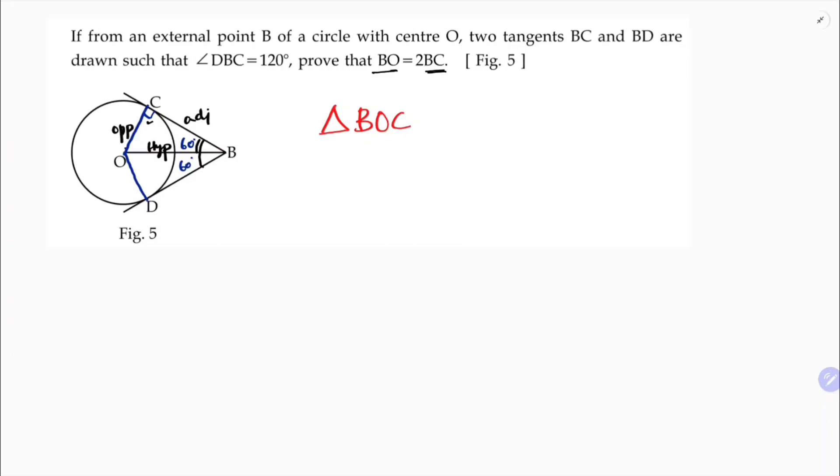So I will use cos theta. Cos theta is adjacent by hypotenuse. So here cos 60 degrees—adjacent is BC, BC, and hypotenuse is OB. Cos 60 degrees value is 1 by 2. So 1 by 2 equals BC by OB.